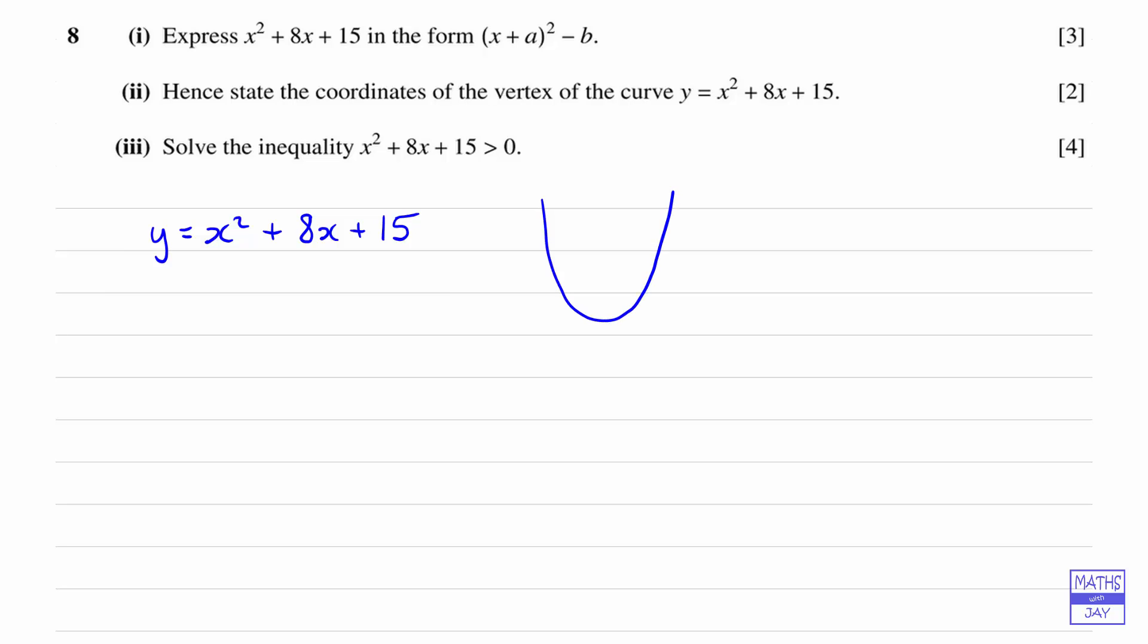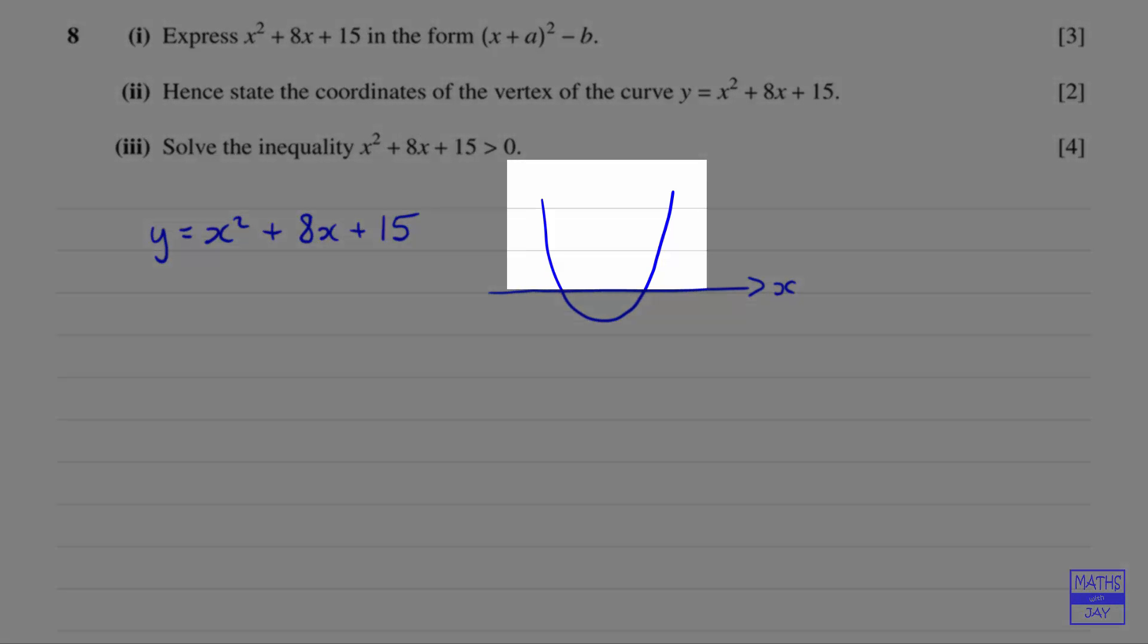So it's going to look something like this. And what we're interested in is where it cuts the x-axis. So let's just draw in an x-axis, and really we're not interested in where the y-axis is, because what we want to know is where y is greater than zero. So we're interested in the parts of this graph that are above the x-axis.